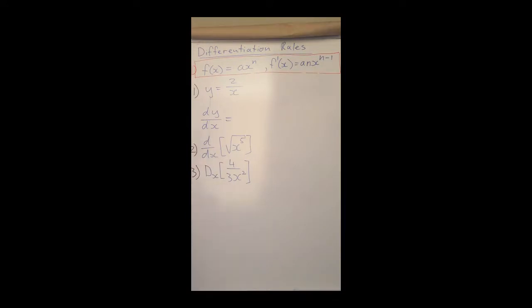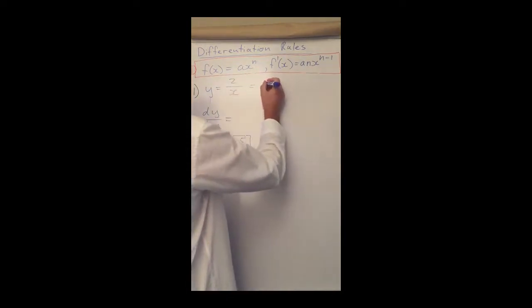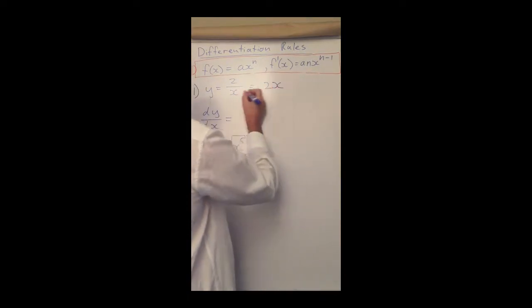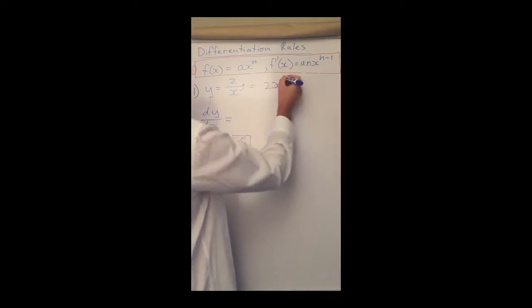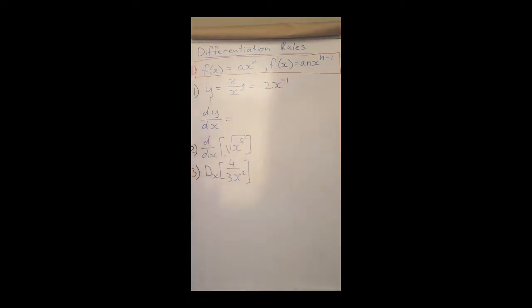The first one to get the dy/dx of that, we need to rewrite this a little bit differently so that we can work with exponents above the line. We can rewrite this one as 2, and this x we can take it to the top. If we do that we need to change the exponent, so we rewrite 2 over x as 2x to the power of minus 1.